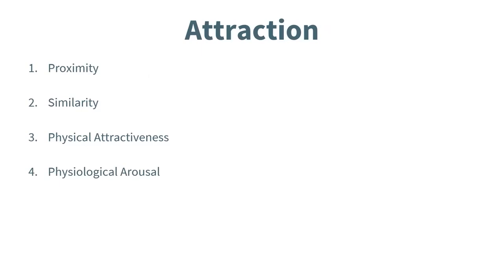Now that we have a grasp of why we form intimate relationships with others, let's discuss some of the prominent ways in which we become attracted to others. The main factors include proximity, similarity, physical attractiveness, and physiological arousal.